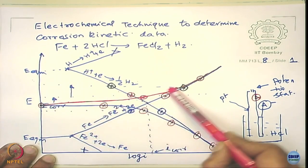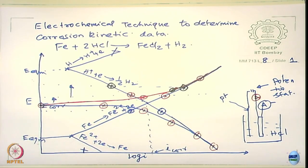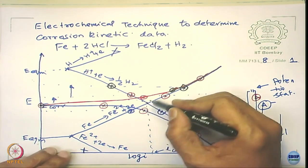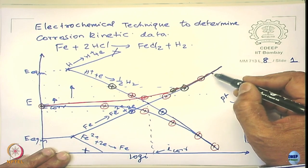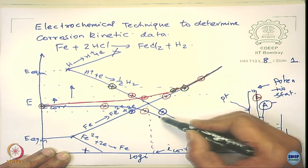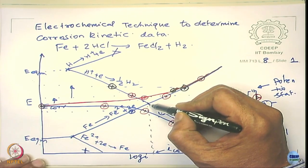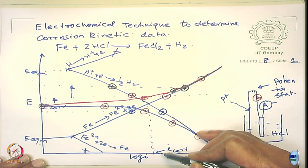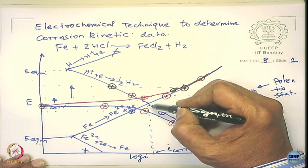So if I have this polarization curve, how do I get I_corr? Simple — you draw a tangent. You do not draw a tangent near E_corr; you draw a tangent here at the linear region because it follows the Tafel equation. The Tafel behavior is at higher overpotentials, not near E_corr. So you draw a tangent from here, extrapolate the tangent, and the intersection point gives you log I_corr. The intersection point ideally gives you the corrosion potential.